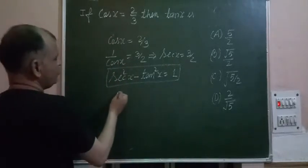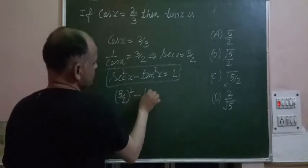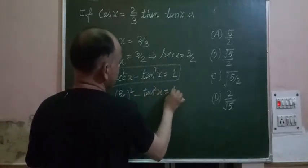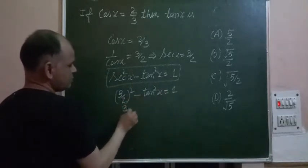So we put here value of sec x is 3 by 2. 3 squared minus tan²x equals 1. We bring 1 to this side and tan towards the right side.